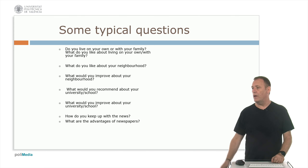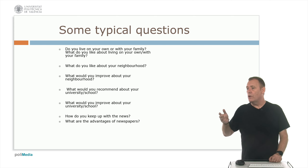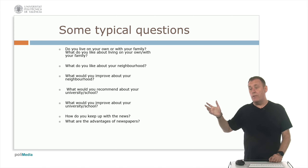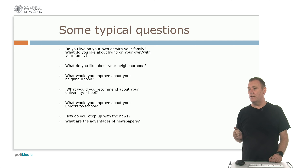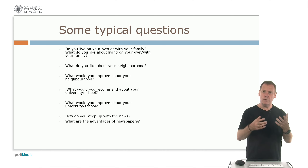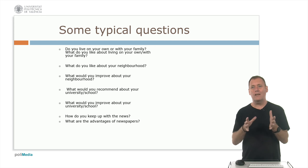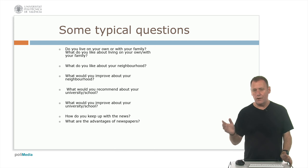Here are some typical questions you might be asked: 'Do you live on your own or with your family?' 'What do you like about living on your own or with your family?' 'What do you like about your neighbourhood?' 'What would you improve about your neighbourhood?' 'What would you recommend about your university or school?' 'What would you improve about your university or school?' 'How do you keep up with the news?' 'What are the advantages of newspapers?' They're general topics, but you still have to give some language — you can't just answer with very short answers.